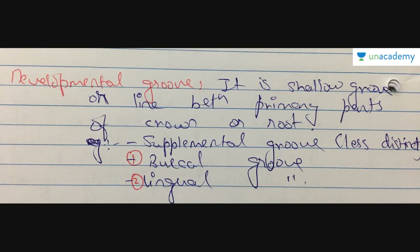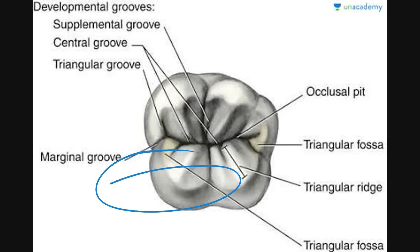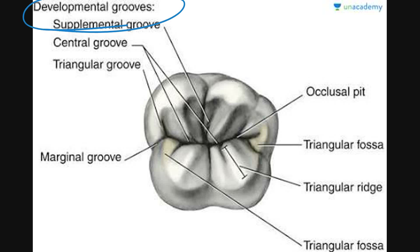A developmental groove is a shallow groove or line between primary parts of the crown or roots. There are also supplemental developmental grooves, which are less distinct and not easily visible. There are buccal grooves and lingual grooves among the types of developmental grooves. You need to know the names and understand where they are located, as these features are very fine and minute and won't be easily seen.